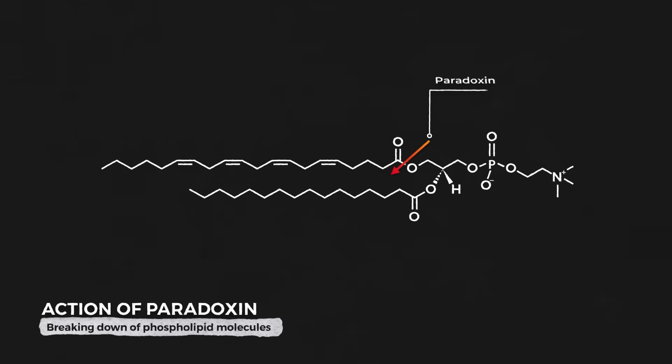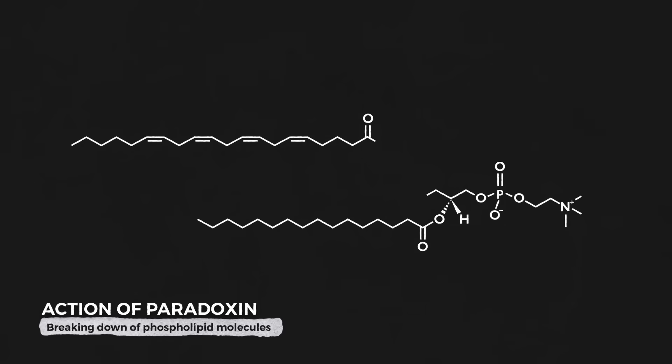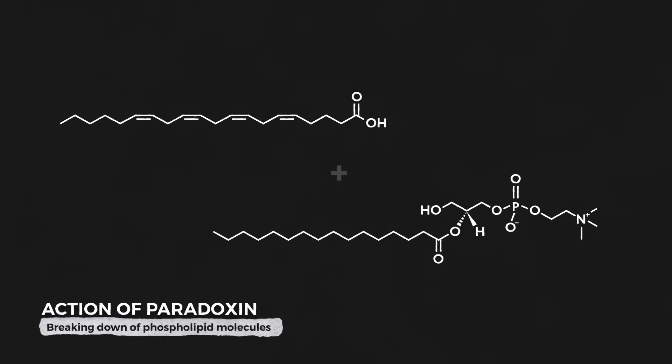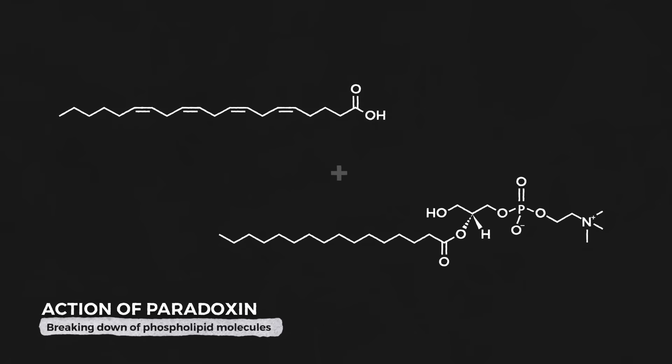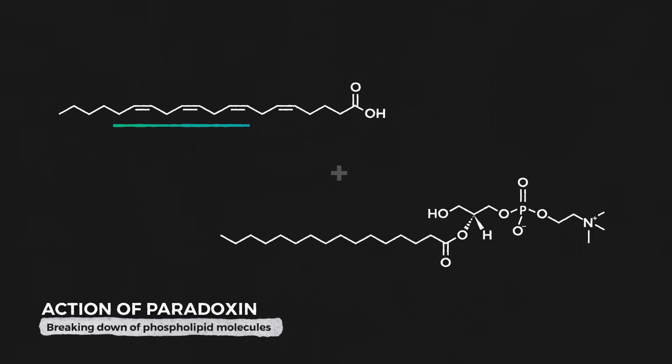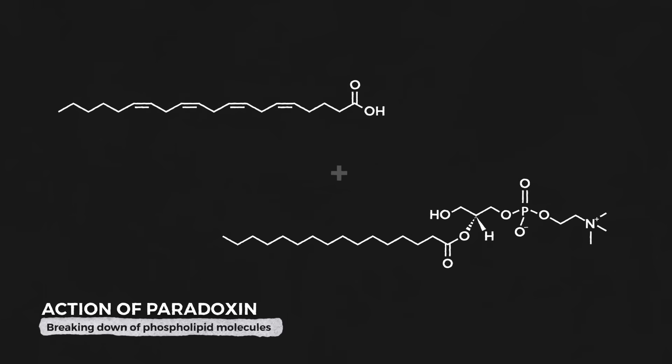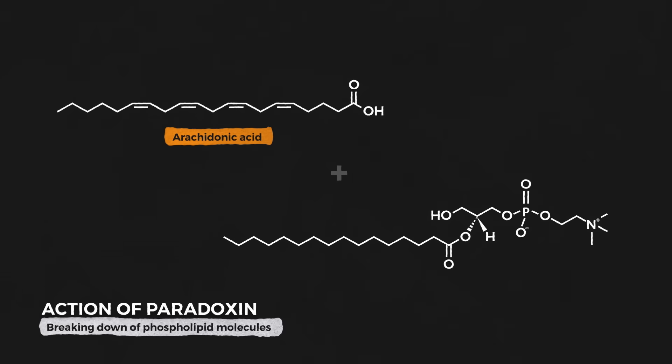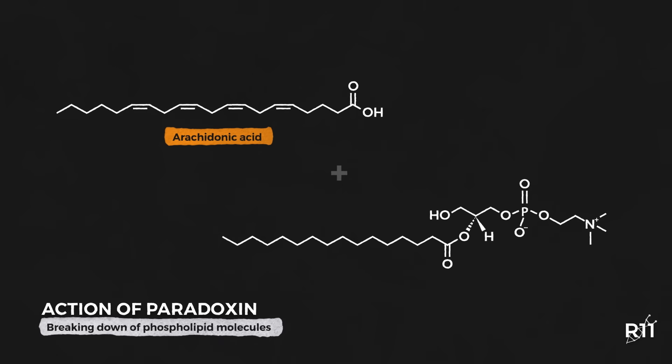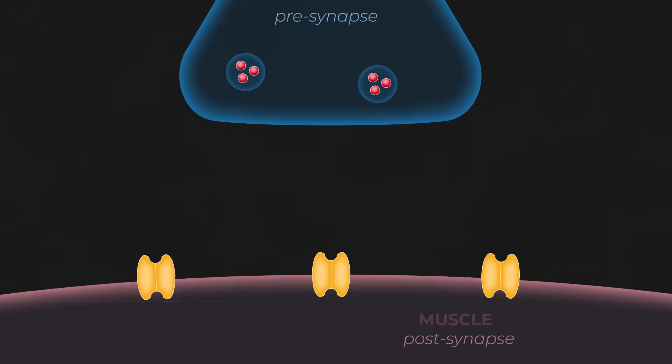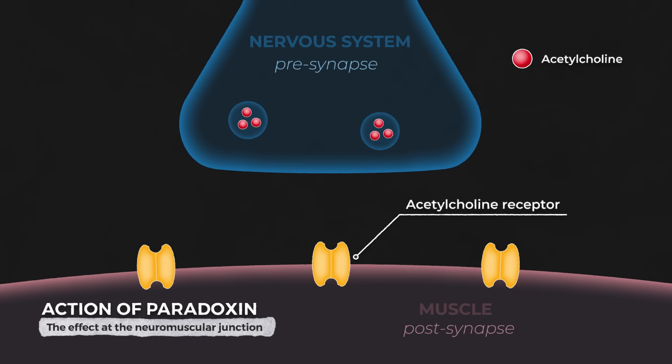Paradoxin breaks this bond which, by itself, is enough to cause significant damage to a cell, potentially rupturing the cell membrane. But it's actually the product of this reaction that causes the biggest problems. When the phospholipid is broken, it releases a fatty acid chain, specifically a molecule called arachidonic acid, and it's this that ultimately leads to permanent paralysis and death. Again, like with the alpha neurotoxins, the site of action of paradoxin is the neuromuscular junction, the point of connection between the nervous system and the muscles.